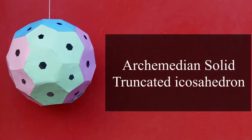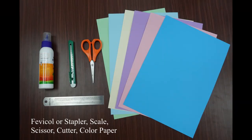Today we will learn how to make a truncated icosahedron Archimedean solid. For that we need some colored paper, scale, glue or stapler, scissor, cutter, etc.